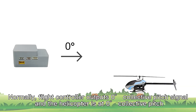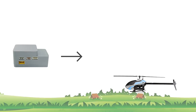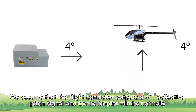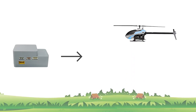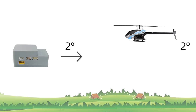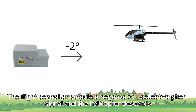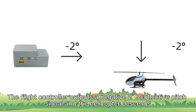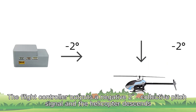Normally, the flight controller outputs a 0 degree collective pitch signal and the helicopter is at 0 degree collective pitch. When it outputs 4 degrees, the helicopter climbs normally. At 2 degrees output, the helicopter hovers. At negative 2 degrees, the helicopter descends.